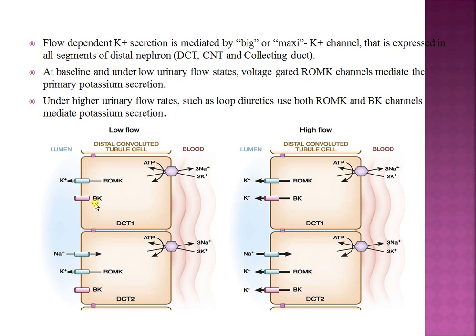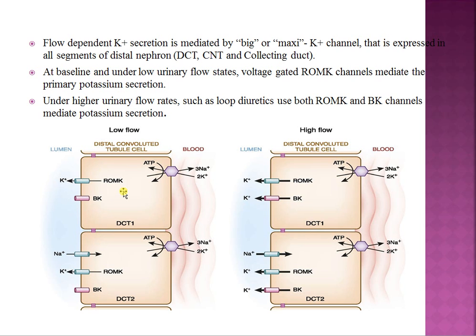There is another type called BK channels — Big Potassium or Maxi channels — present in the distal nephron: DCT, connecting tubules, and collecting ducts. At baseline they are closed; only ROMK channels mediate potassium secretion. However, under high urinary flow rates — for example, with loop diuretics — increased urine flow opens these BK channels, which are not voltage-dependent. They open and secrete additional potassium alongside ROMK channels, which is why loop diuretics tend to cause hypokalemia.